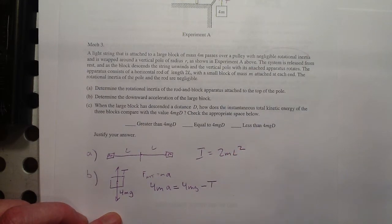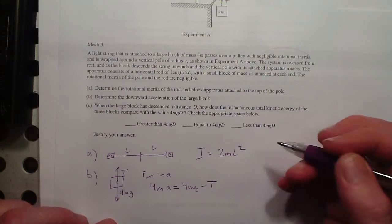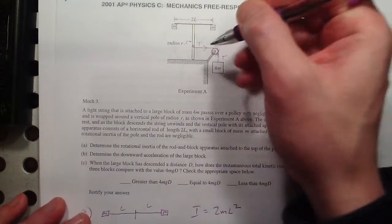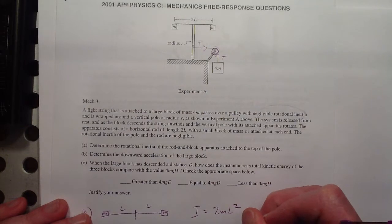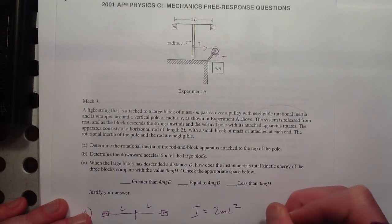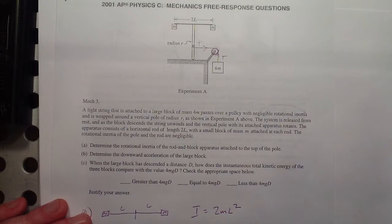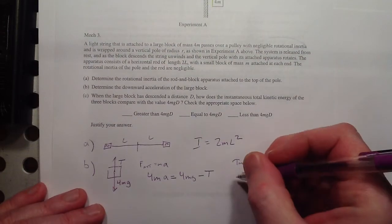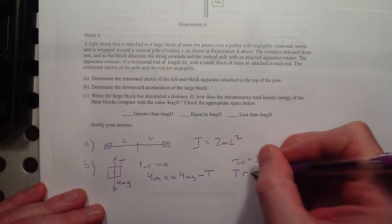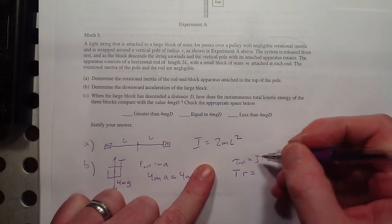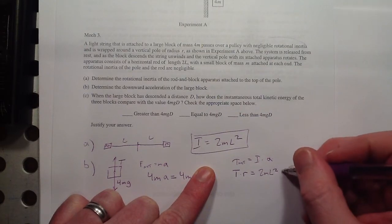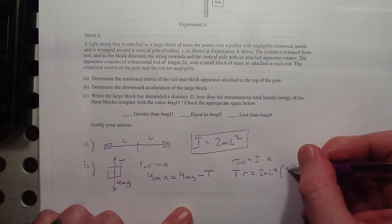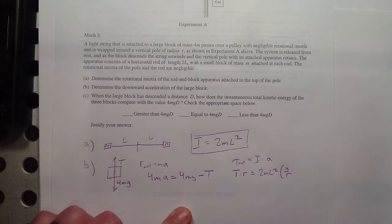That's our first equation. Now for the rotational system, there's a torque from the tension. Net torque equals moment of inertia times angular acceleration. The torque is T times R. The moment of inertia we calculated in part A is 2ml² times the angular acceleration. Angular acceleration equals A over R, so I'll make that substitution.